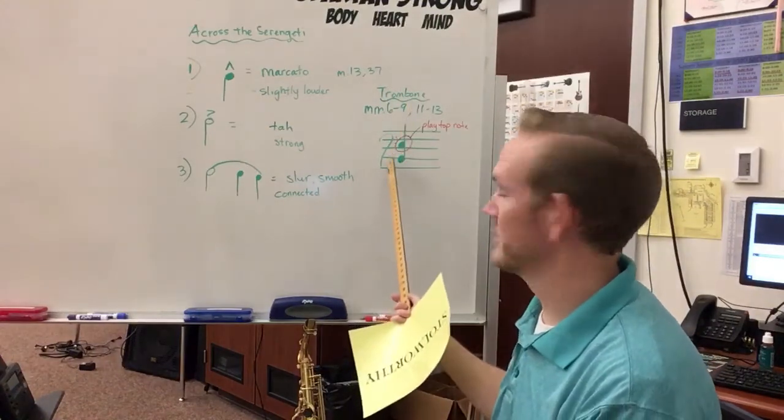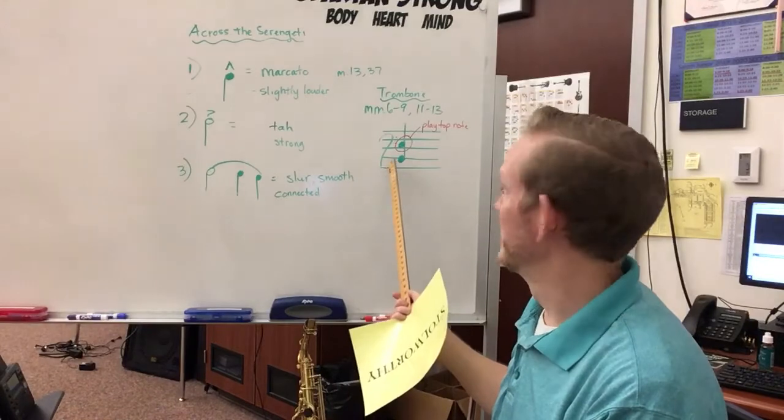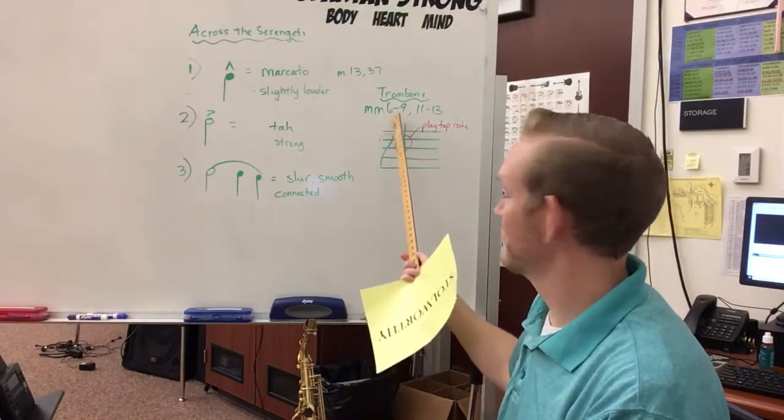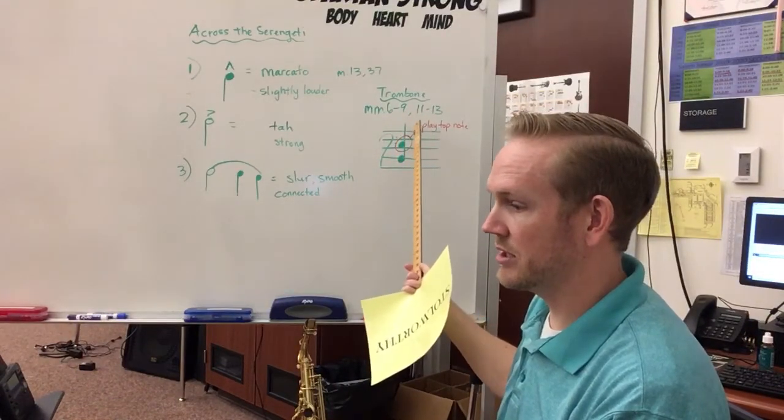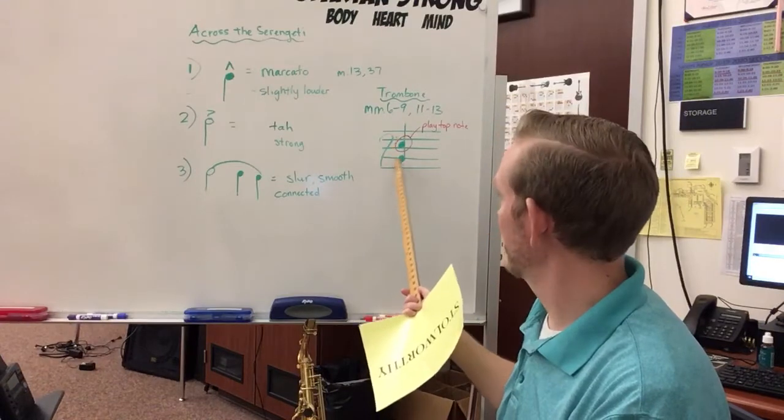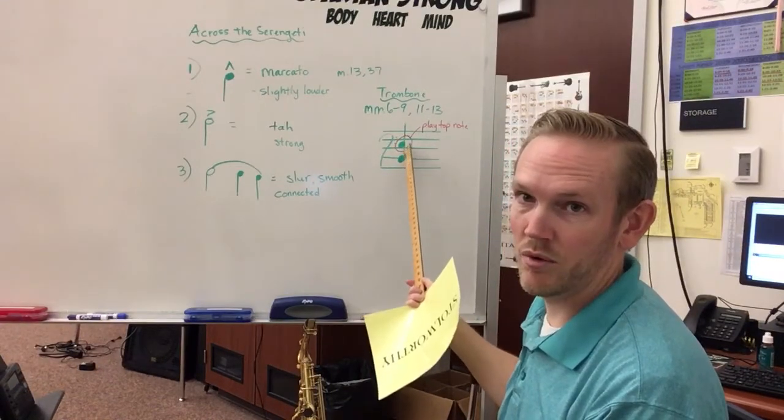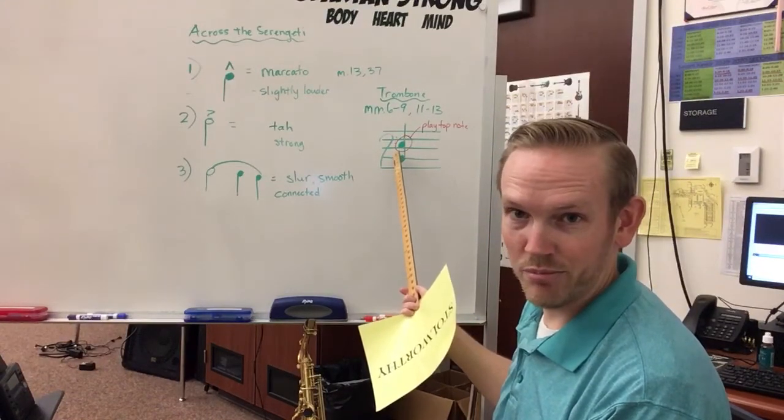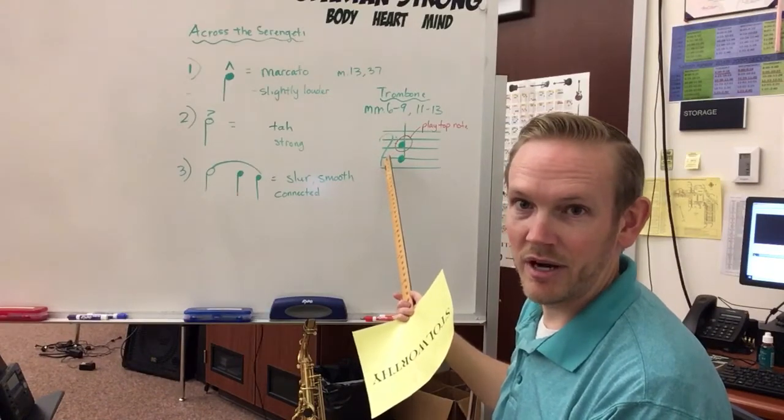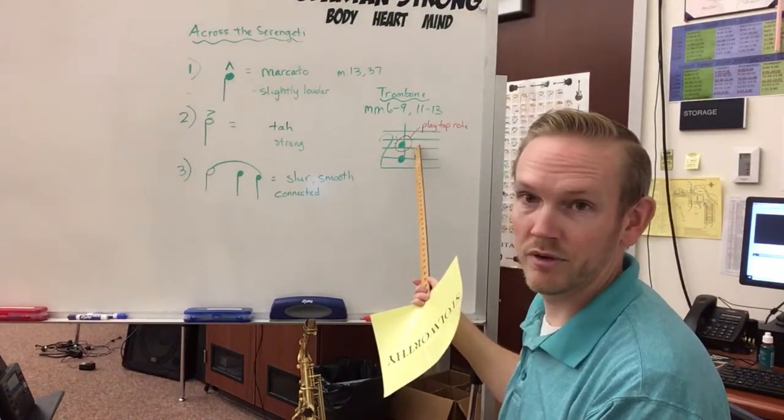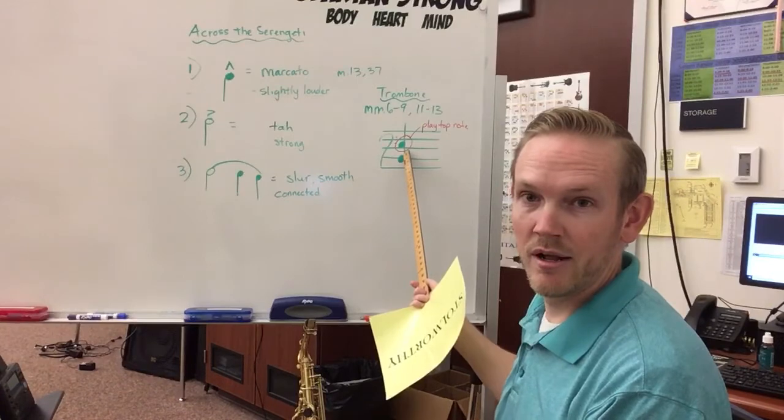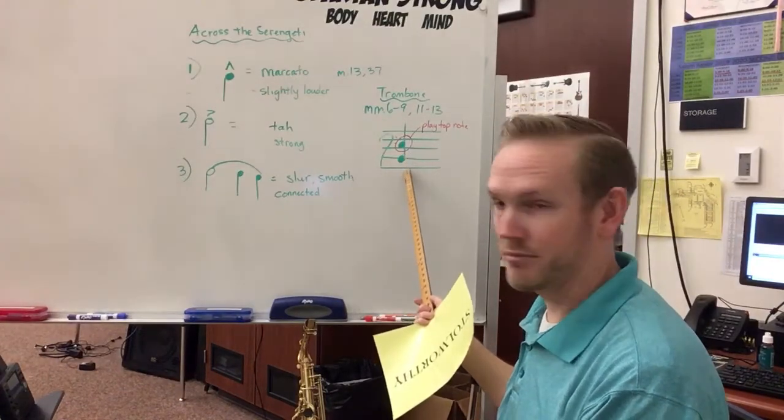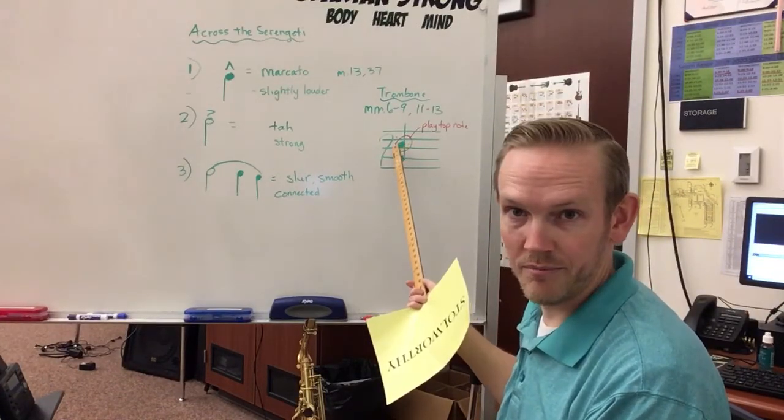And last thing that's specific to you is in measures 6 through 9 and 11 through 13 and even at the end of the song, you're going to see two notes at once. You don't need to play two notes at once. I'm going to have you play the top note for each time that there's a split there. The euphoniums will play the bottom and you are playing the top.